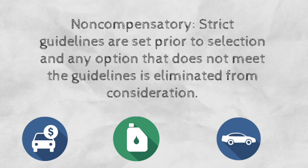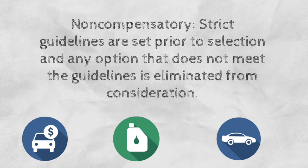The use of decision rules is important because these rules allow consumers to simplify their thought processes. However, these rules are also used in high involvement purchase situations. For example, the decision of what car to buy is certainly a high involvement decision for most people. Because of this, consumers can combine decision rules in order to arrive at a final solution.